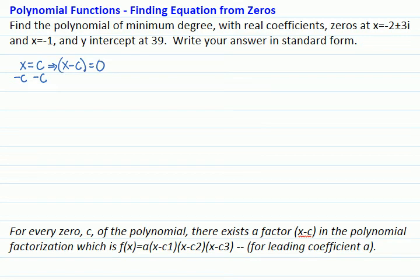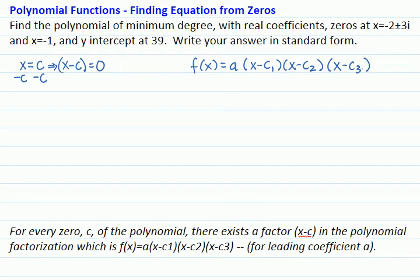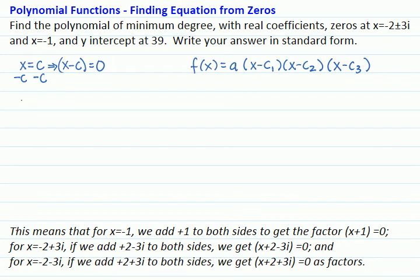That means that our function f will equal a times x minus c1, x minus c2, x minus c3 for the three zeros, with a being the leading coefficient. And for the zero x equal to negative 1, if we add 1 to both sides, we will get x plus 1 as our first factor.